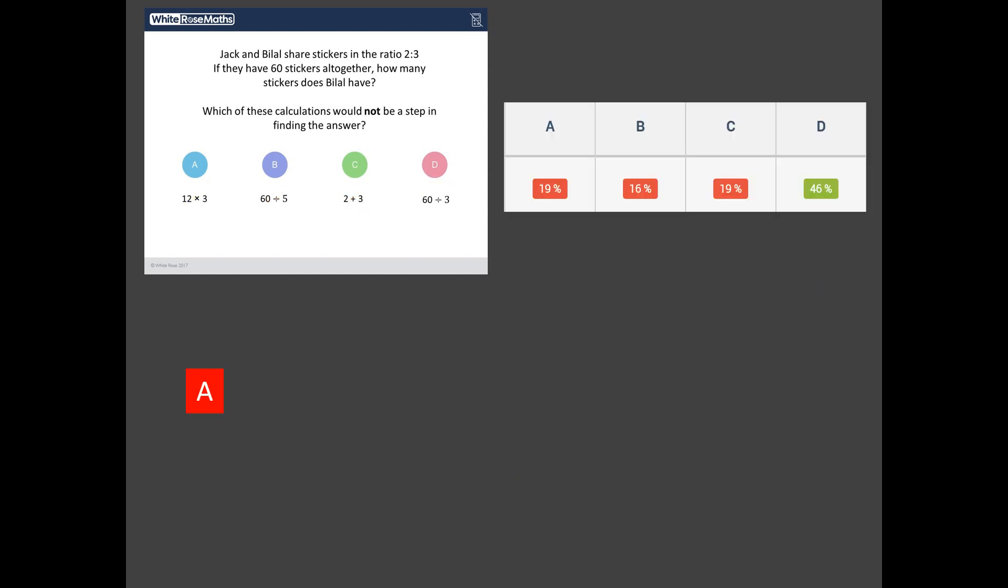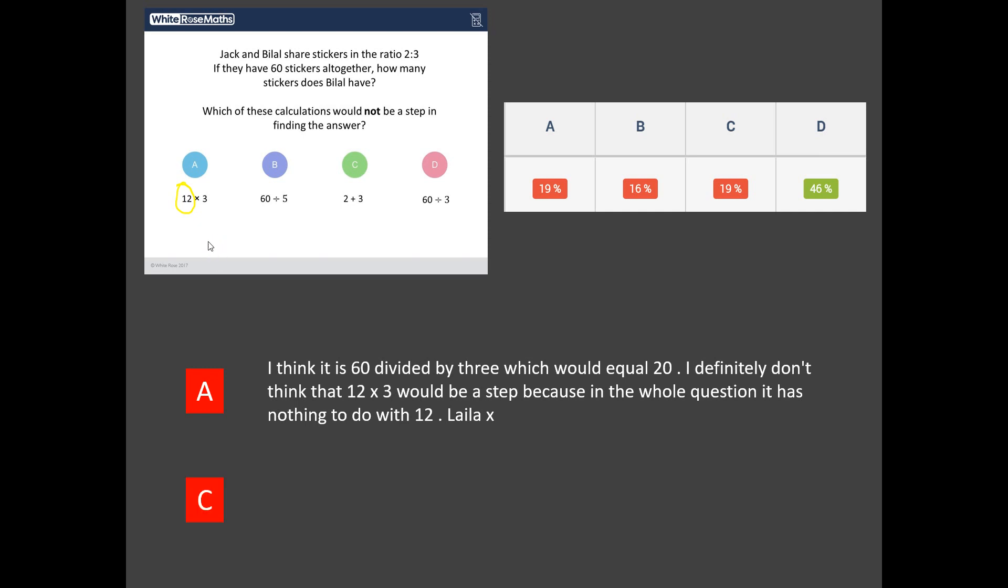Let's have a look at some of their choices of answers. So there's a student who thinks that the answer, the correct answer is A. I think it's 60 divided by 3 would equal 20. I definitely don't think that 12 times 3 would be a step. Because in the whole question it has nothing to do with 12. So yeah, this is a student thinking, well where on earth does 12 come from? 12 isn't mentioned in the question. But we've seen when you do 60 divided by 5, that's where the 12 comes from. What about a student who thinks the answer is C? Doesn't think that 2 plus 3 is involved. Well, they have 60 stickers, 2 plus 3. And if you want to find how many they have, you've got to divide by 2 or 3. Again, it's the same problem. The student hasn't realised that actually you need to do 2 plus 3 to give you the 5 parts that they've got in total.